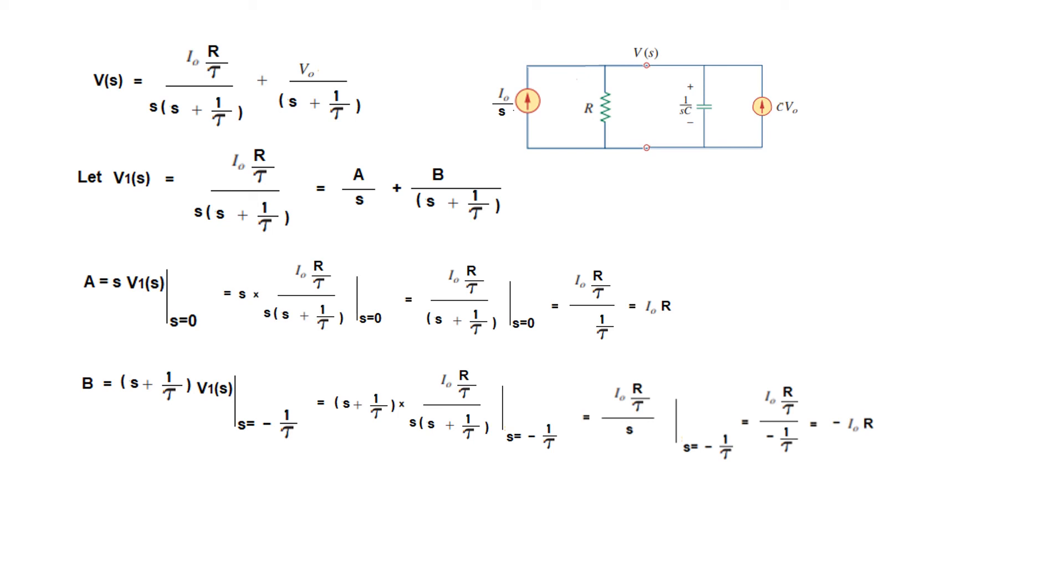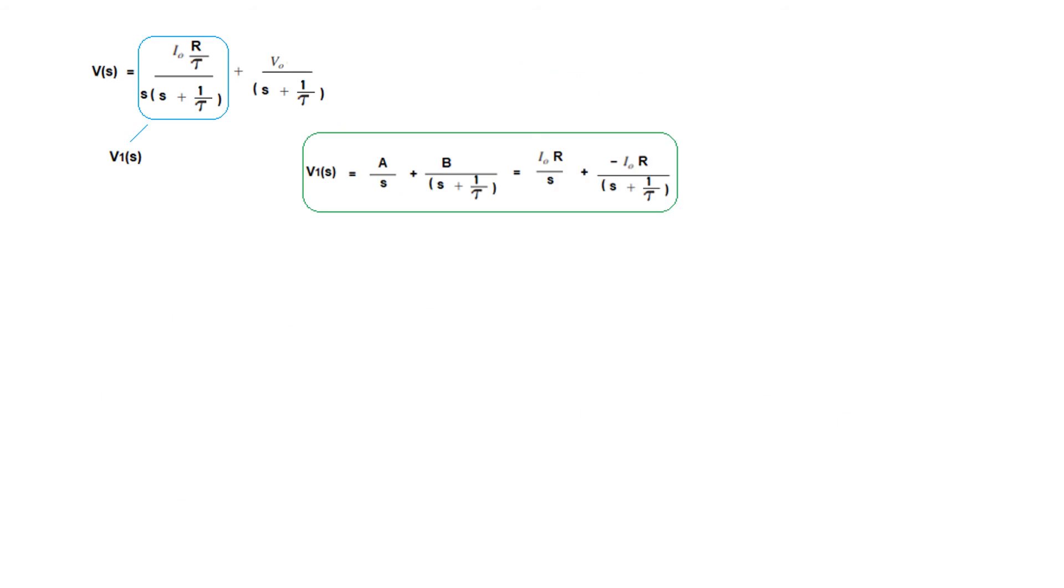We have found the two values: V1(s) is I0R for A and minus I0R for B. Now we will solve the complete equation by plugging in these values.